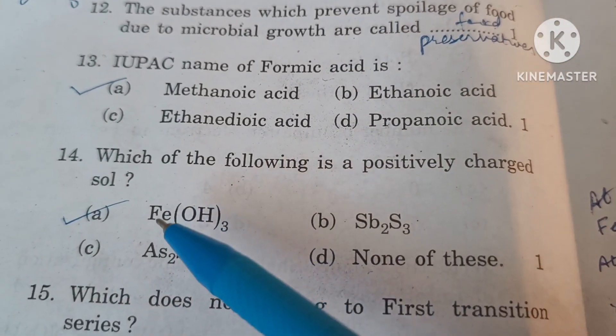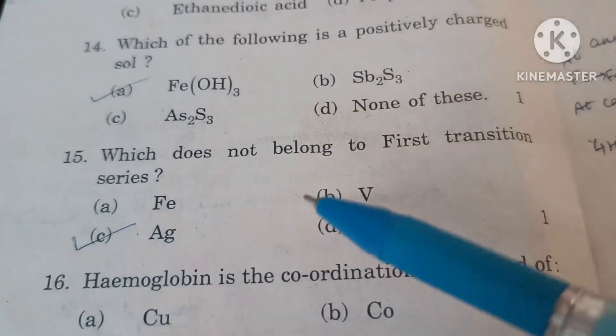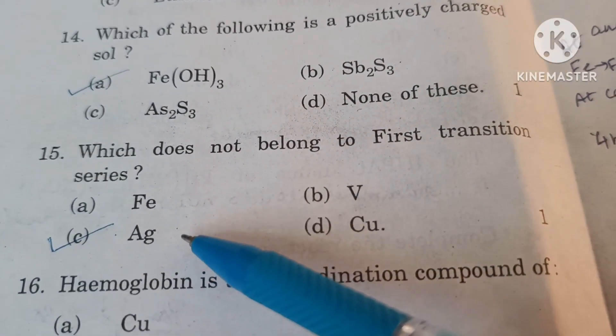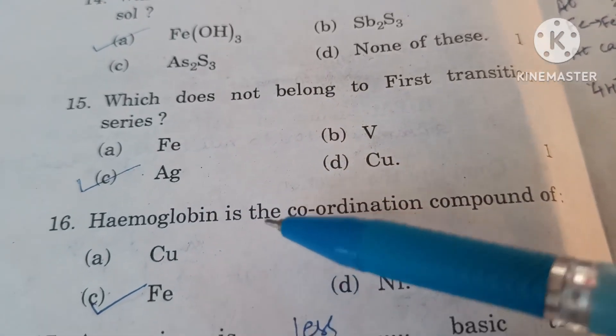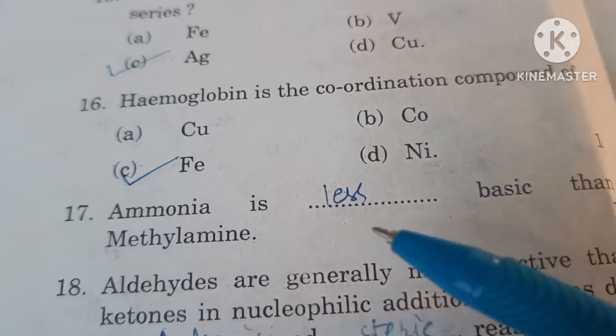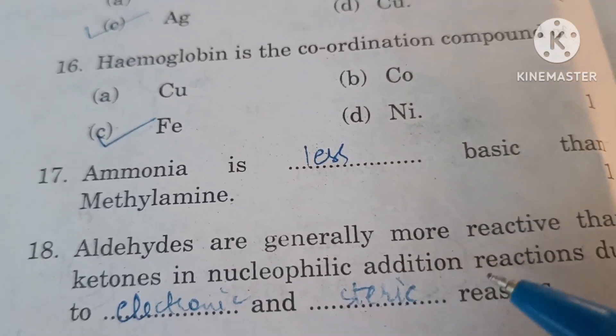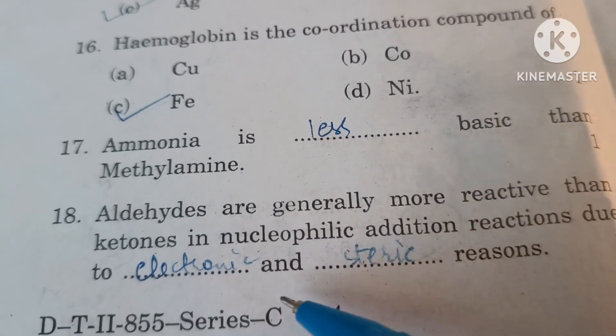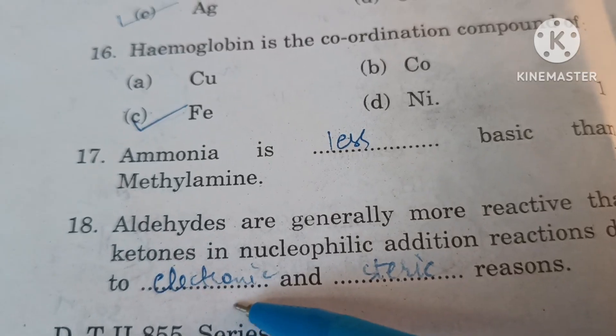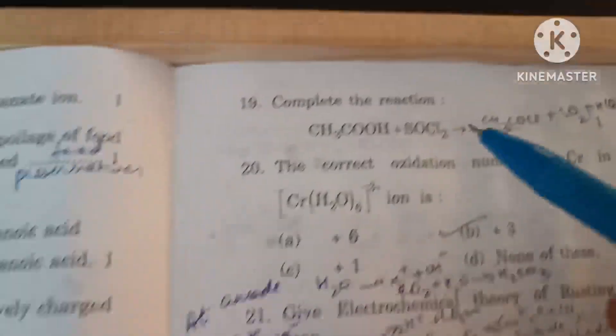IUPAC name of formic acid is methanoic acid. Which of the following is a positively charged sol? Ferric hydroxide is a positively charged sol. Which does not belong to first transition series? Silver, it belongs to second transition series. Hemoglobin is the coordination compound of iron. Ammonia is less basic than methylamine.